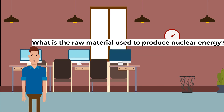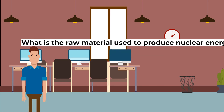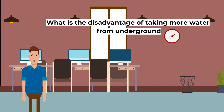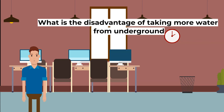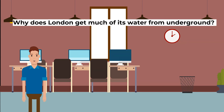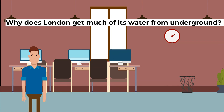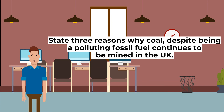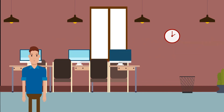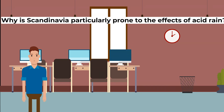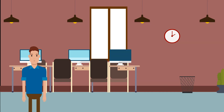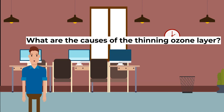What is the raw material used to produce nuclear energy? What is the disadvantage of taking more water from underground? Why does London get much of its water from underground? State three reasons why coal, despite being a polluting fossil fuel, continues to be mined in the UK. Why is Scandinavia particularly prone to the effects of acid rain? What are the causes of the thinning ozone layer?